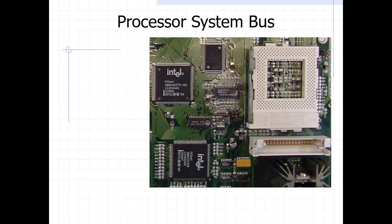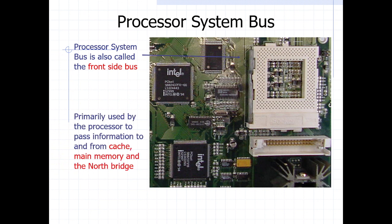We also have the processor system bus, which actually coordinates communication between the various components and the processor. It is close to the South Bridge or the North Bridge — we call it the front bus system. This coordination of processing happens between the processor, the North Bridge, the main memory, and the cache memory. Cache memory stores frequently accessed instructions, whereas main memory is a bit farther from the main processor.